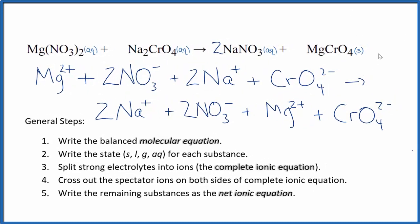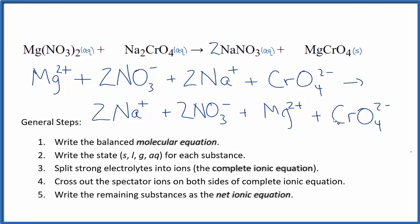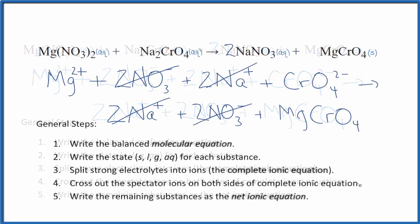In that case, here's what we do in net ionic equations: we don't split apart solids. So we need to put the Mg2+ and the CrO42- back together into a solid compound. Now we can cross our spectator ions out, and we're left with the net ionic equation.